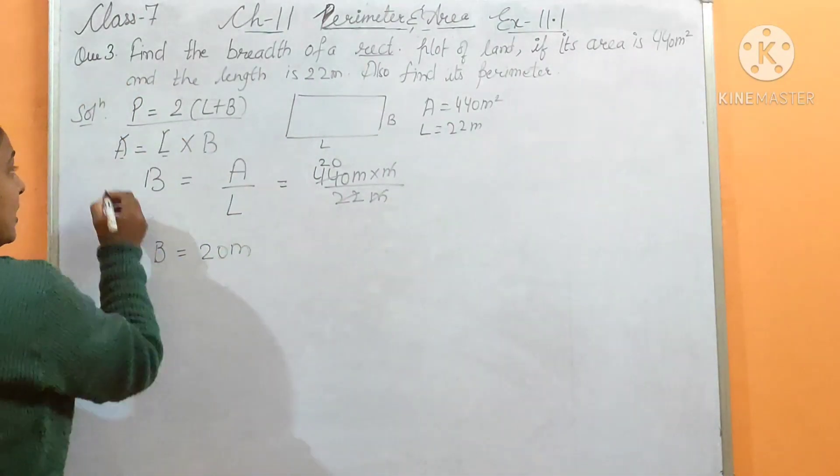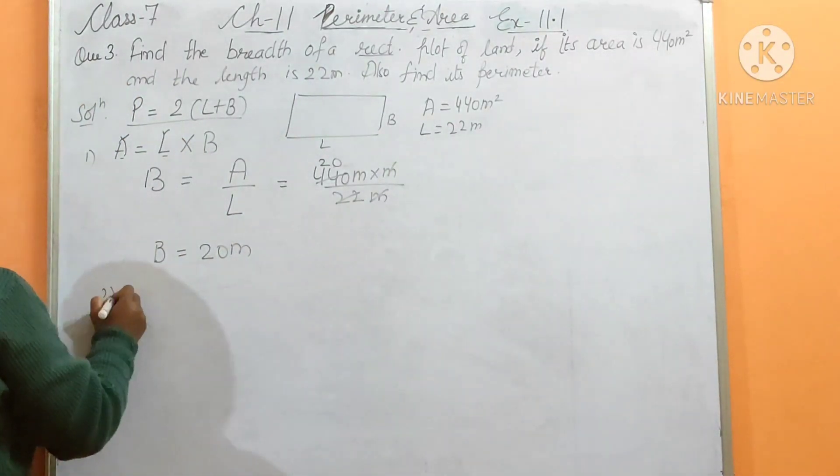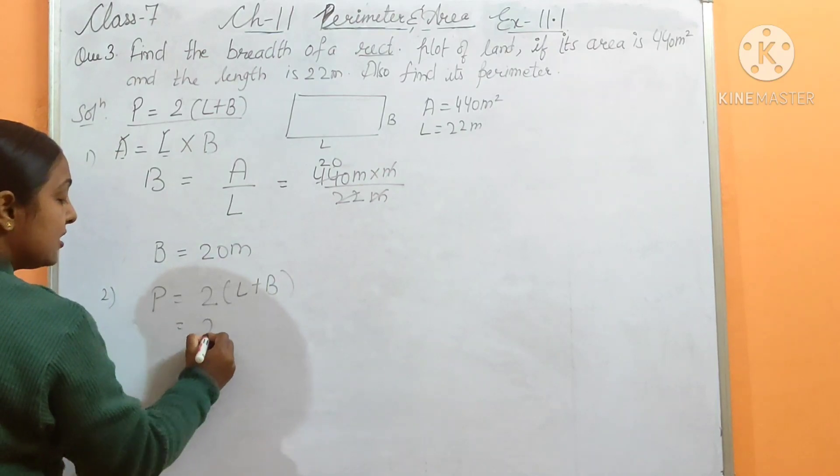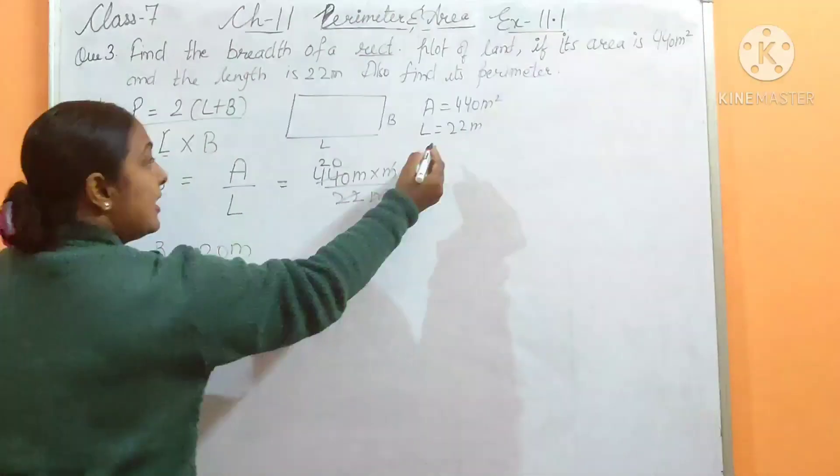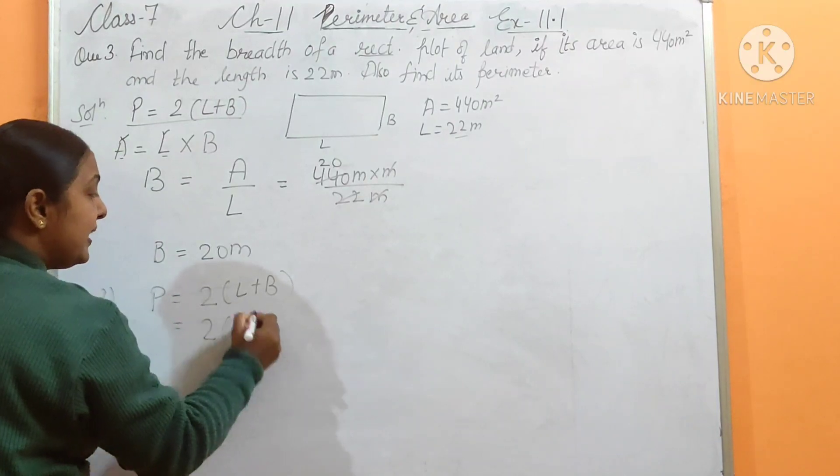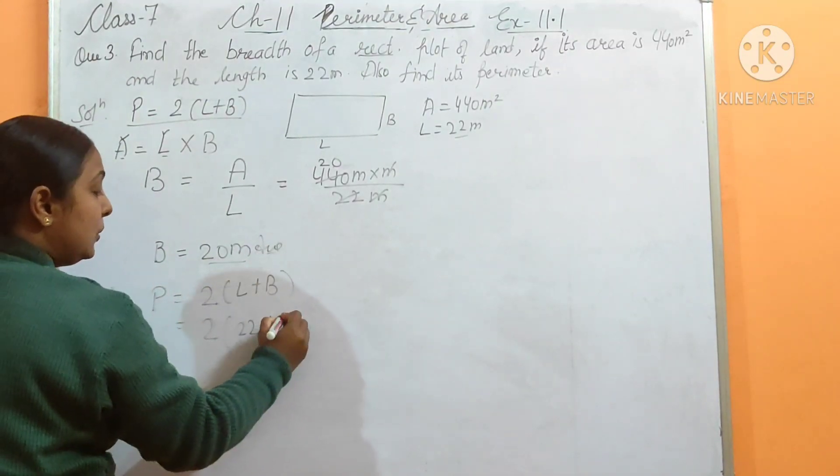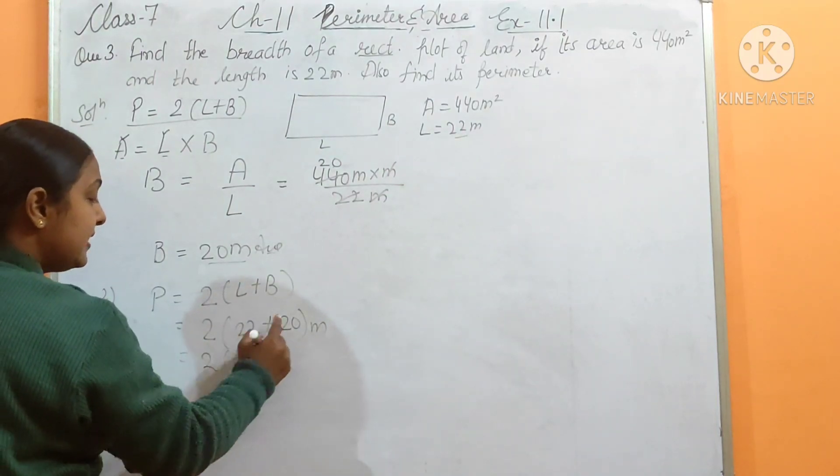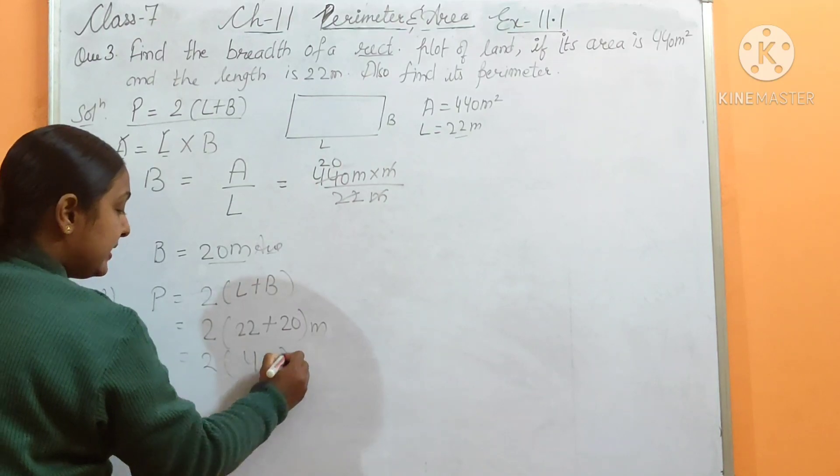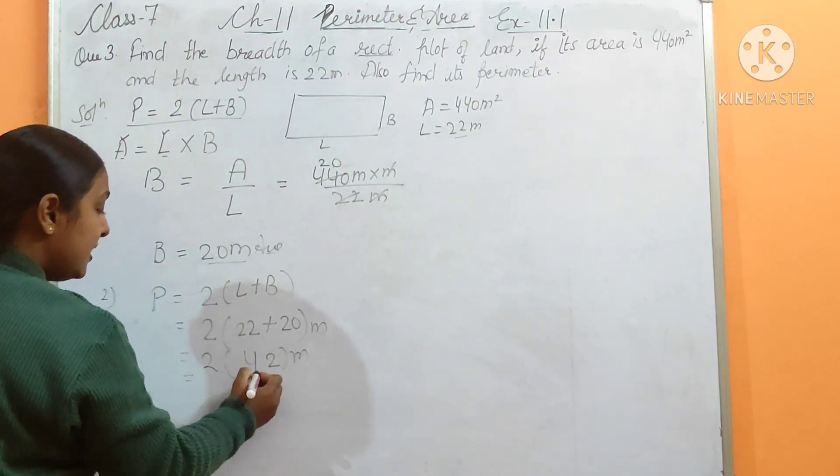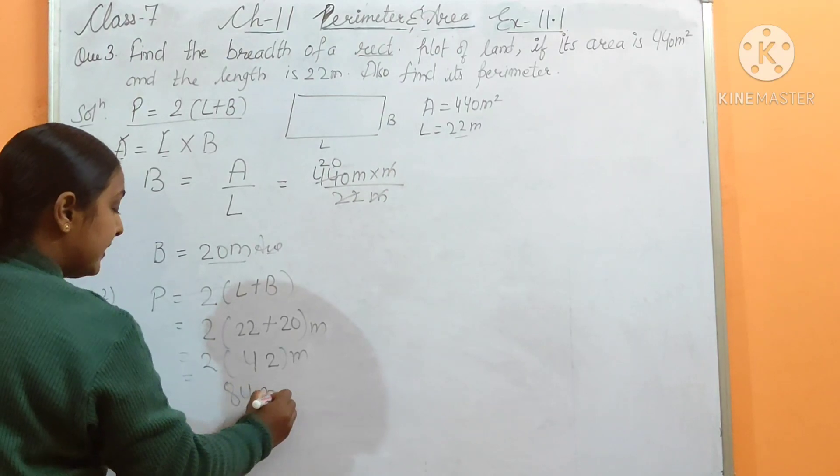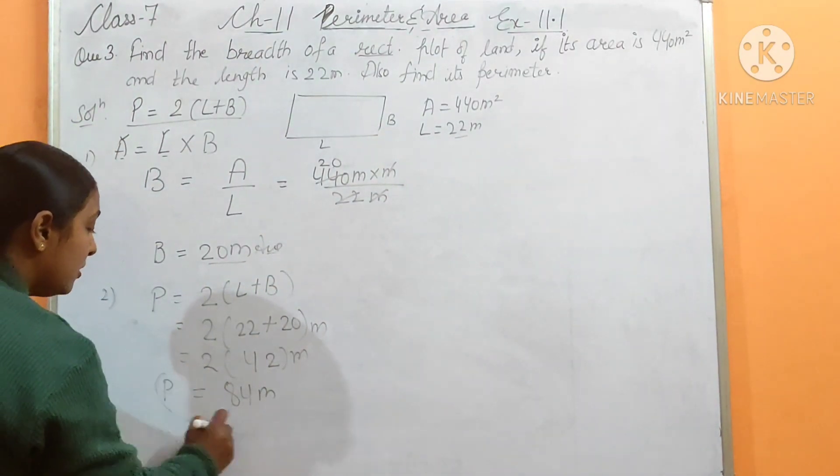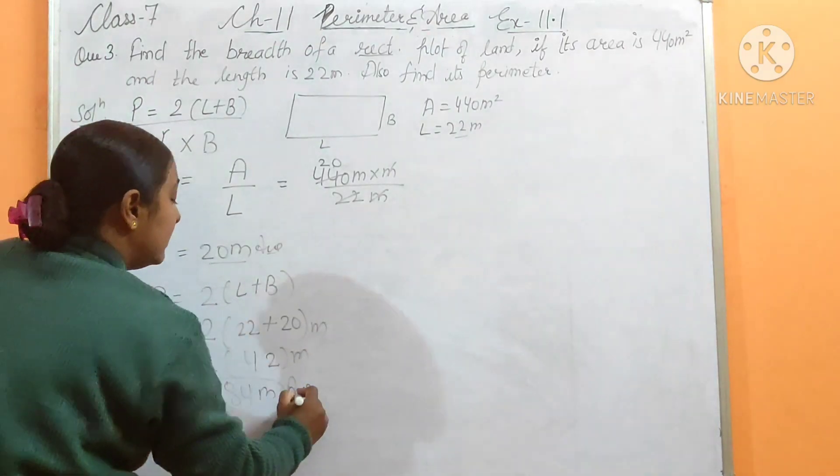With breadth I also need to find the perimeter. The perimeter formula is 2(L + B). So perimeter equals 2 times (22 + 20). L was 22 meters, B we just found is 20 meters. First add these: 22 plus 20 equals 42 meters. Then multiply by 2, which gives 84 meters. The perimeter is 84 meters. This is the answer of the third question.